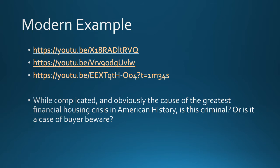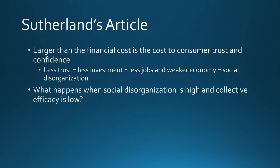A modern example of white-collar crime is based on The Big Short, the movie with Steve Carell and Ryan Gosling, about the housing market crisis. This housing market crash was the cause of the greatest financial housing crisis in American history. But the question becomes: is this criminal? When the subprime mortgage issues developed, was this an issue of buyer beware? People knew they were buying houses they couldn't afford, and they knew they shouldn't really qualify for the mortgages they were getting. Is it the bank's fault for taking a chance on them? Sutherland would argue clearly it's the bank's fault.